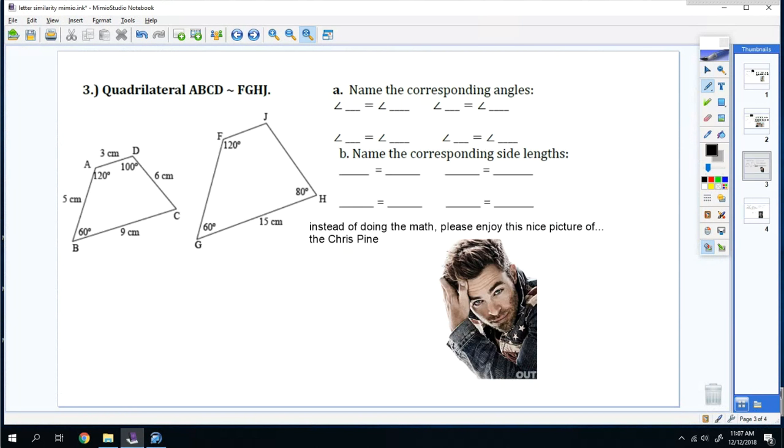We have quadrilateral ABCD is similar to FGHJ. So you write ABCD over FGHJ. So angle A corresponds to angle F. Angle B corresponds to angle G. Angle C corresponds to H. Angle D corresponds to angle J.